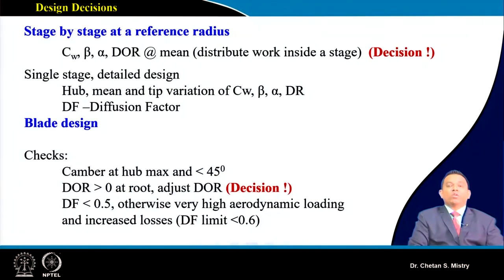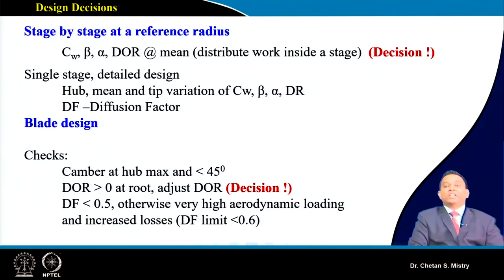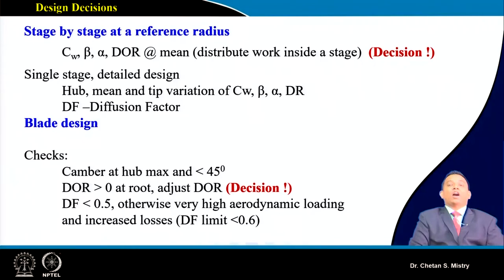We calculate different parameters including the whirl component, blade angles, flow angles, degree of reaction, and diffusion factor — all at the midsection. This gives us an idea of the work distribution along the span, which is the designer's choice. Once decided, we design a single-stage axial flow compressor calculating all these parameters at hub, mid, and tip sections, then systematically divide the span into subsections and calculate all parameters at each subsection. This tells us how the rotor and stator blades will look.